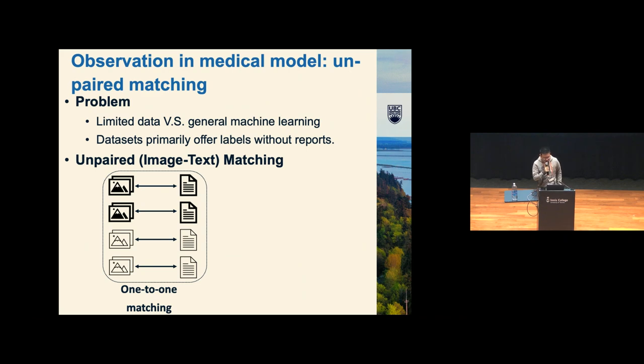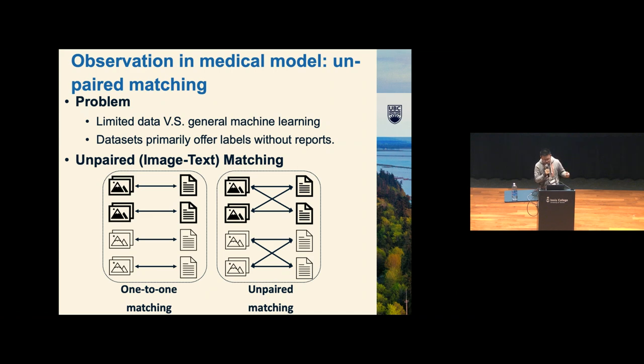Another observation from us is from the medical model. As you can tell, in the medical domain, people have limited data versus general machine learning. For vision and language data especially, many datasets only offer labels without reports. To handle this situation, if we are going to train an image-text model, traditionally people will use one-to-one matching, like one image matched to its text. But in medical scenarios, this data is really limited. What people think about is to use unpaired matching. As you can see, this is one-to-many matching. Let's say the deep blue represents a positive class, and light blue represents a negative class. An image with positive class can be matched to all of the text, as long as the text is describing the disease as negative. This way, we get an augmented effect in training the model.